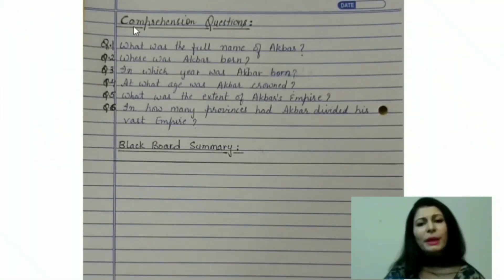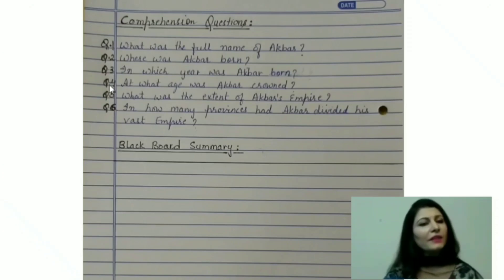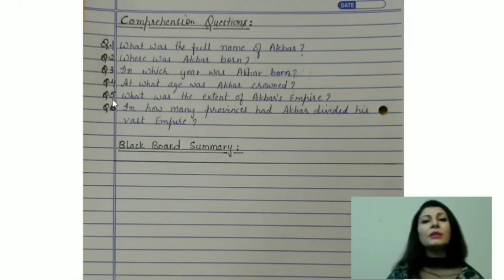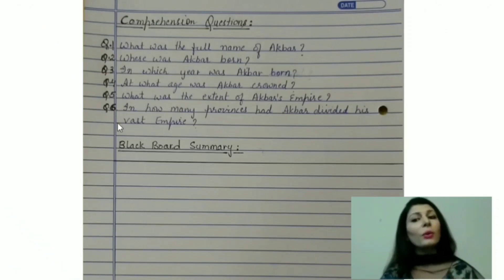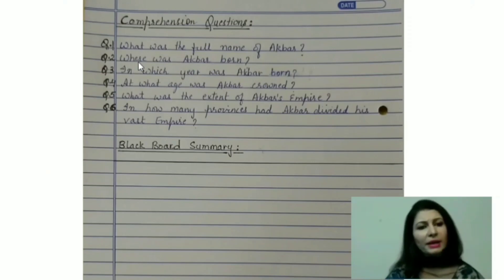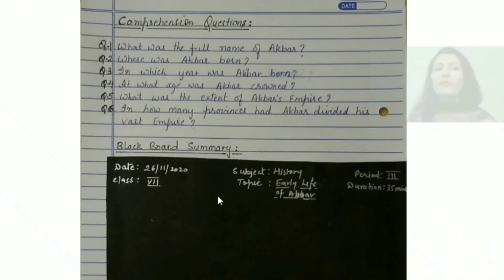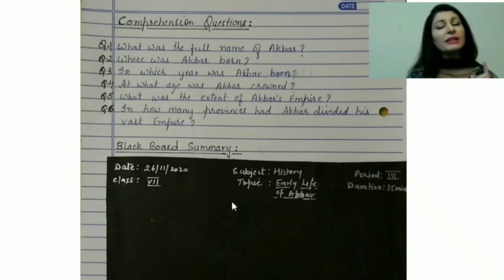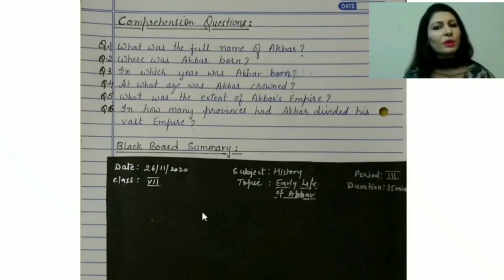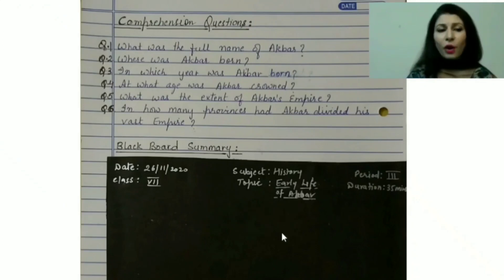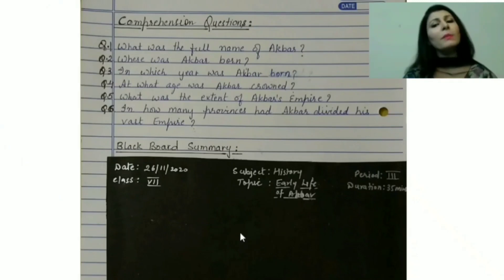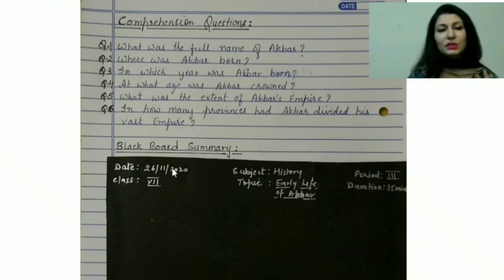The next heading would be comprehension questions. Here you will ask at least five to six questions related to the teaching points. Questions should have what, when and where in them. When you will be asking students these questions while teaching in the class, you will write their answers on the board in a diagrammatic form or in the form of a flow chart, and in this way you will prepare your blackboard summary. So the next heading would be blackboard summary.